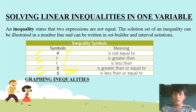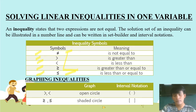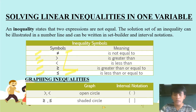Graphing inequalities. For graphing, if it is an open circle, that is for greater than and less than. If it is greater than or equal to or less than or equal to, the graph uses a shaded circle, and the interval notation uses a bracket.